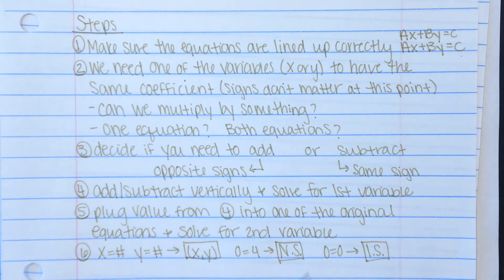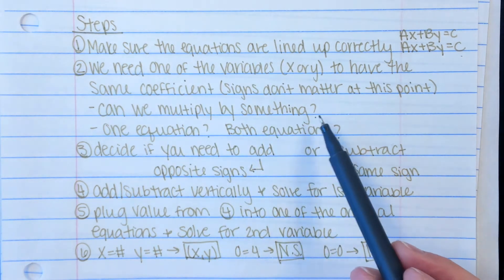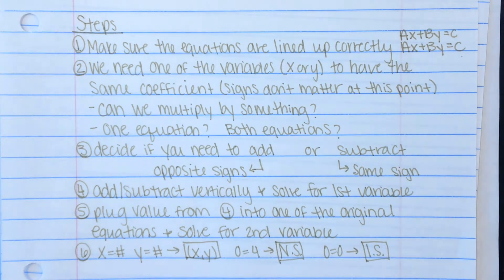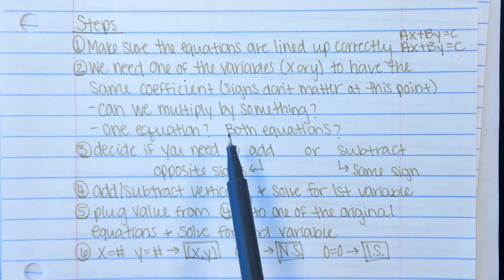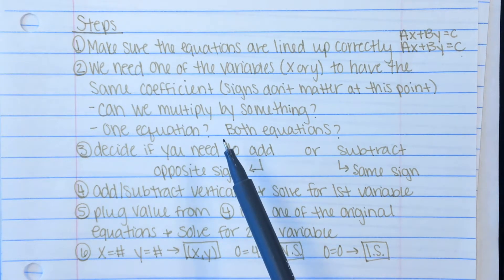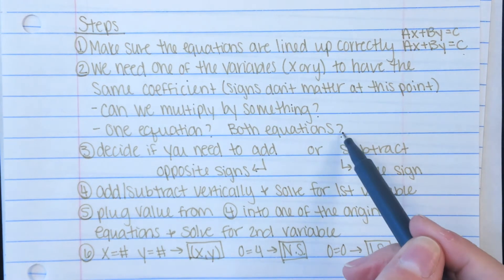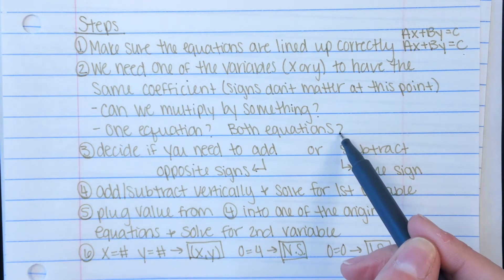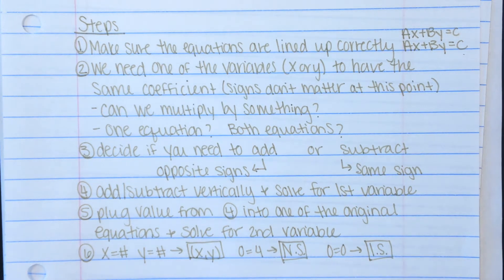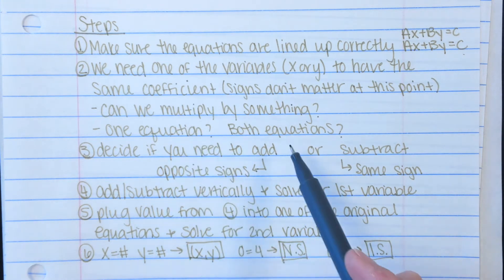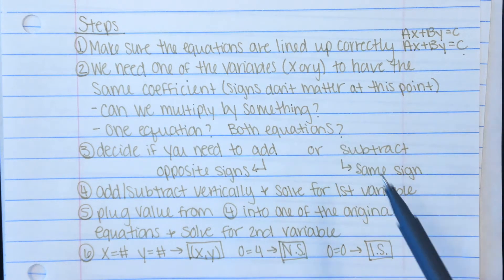Sometimes you need to manipulate one or both equations — multiply one equation by something, or multiply both. How can you make one of your variables have matching coefficients? We'll look at that in the examples. Sometimes it's set up so you only need to multiply one equation; sometimes you need to multiply both. If you can't tell, you can always multiply both — that process works every single time. I'll show you how to multiply both equations in the last examples.